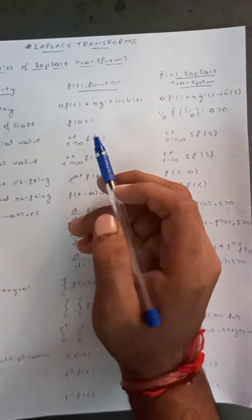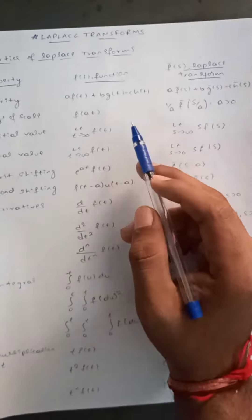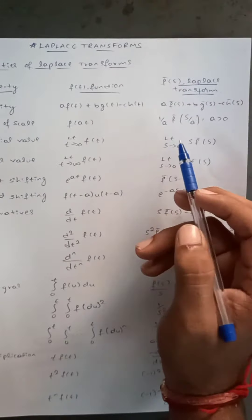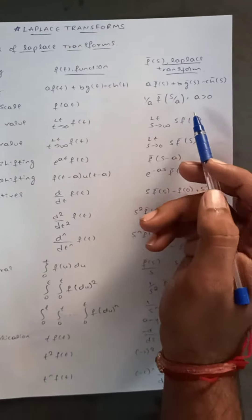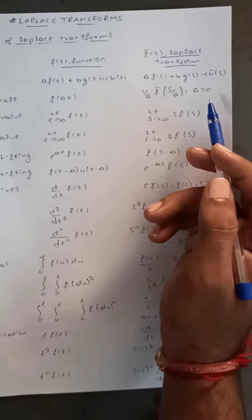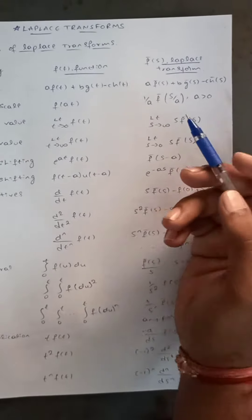Change of scale means: the Laplace transform of f(at) equals (1/a)·f̄(s/a), where a is greater than zero.